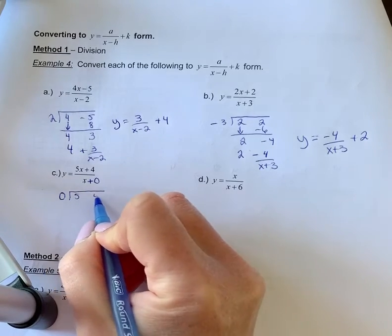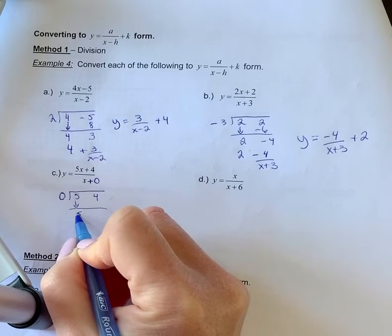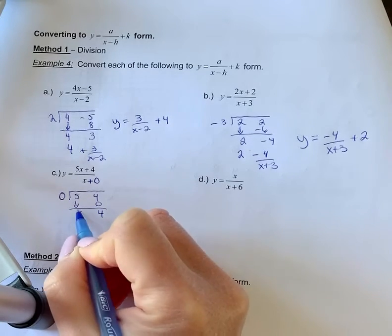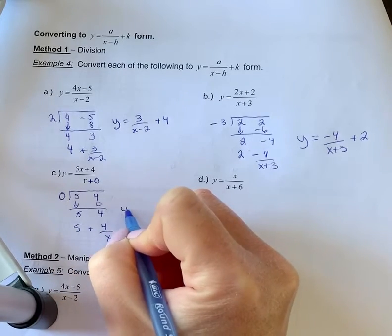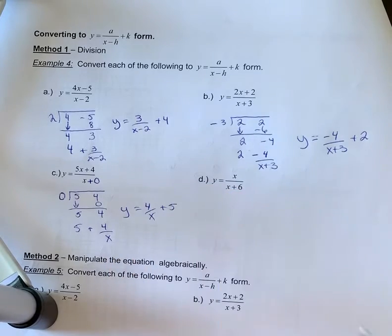We put in our coefficients, bring that down, 0 times 5 is 0, add, and you're going to get 4. So you're going to get 5 plus 4 over x. So our equation is y equals 4 over x plus 5.